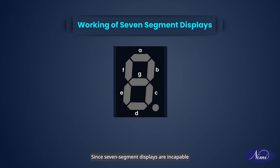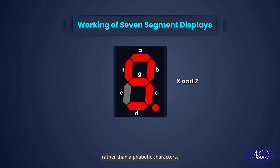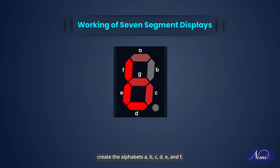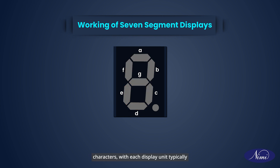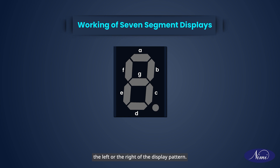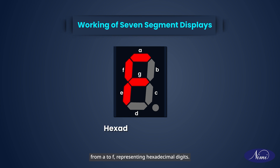Since seven segment displays are incapable of forming alphabets like X and Z, their use is limited to displaying decimal numbers rather than alphabetic characters. Nevertheless, seven segment displays can create the alphabets A, B, C, D, E, and F, making them suitable for representing these characters, with each display unit typically featuring a dot point (DP). This dot point can be positioned either to the left or the right of the display pattern. Such a pattern is useful for displaying numerals ranging from 0 to 9 and letters from A to F, representing hexadecimal digits.